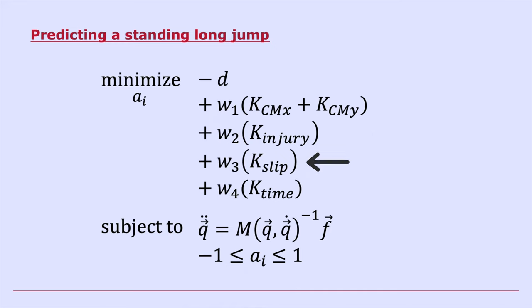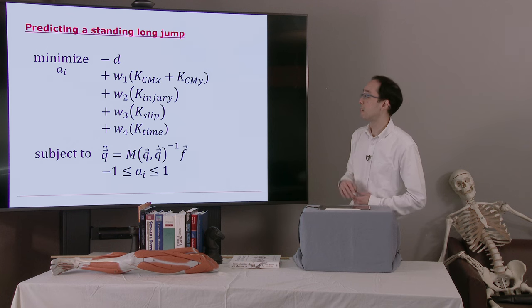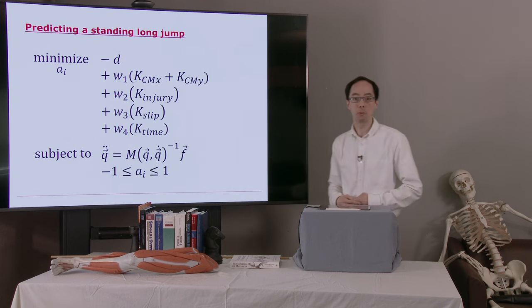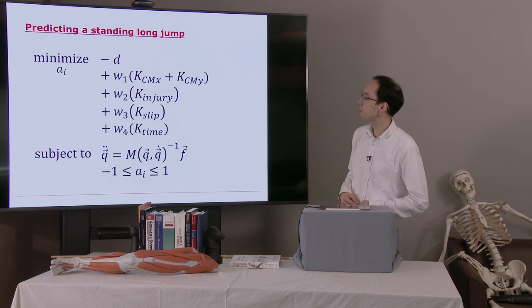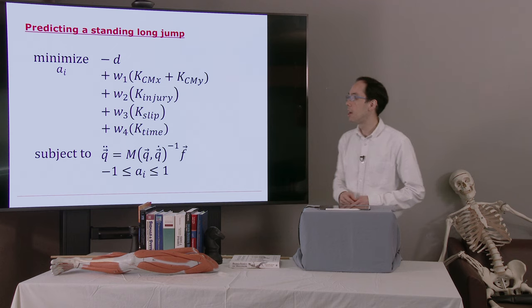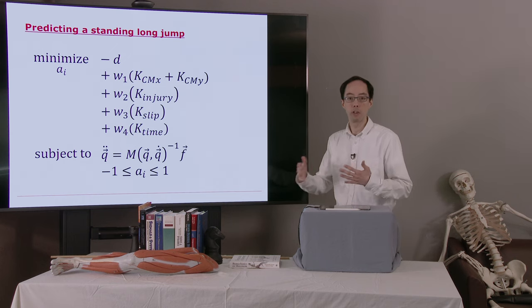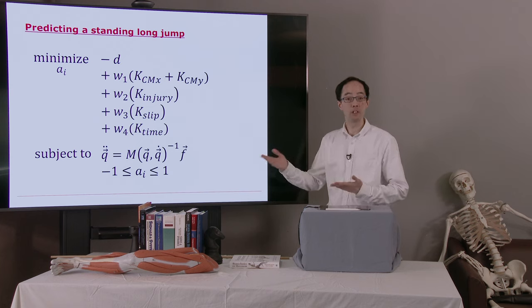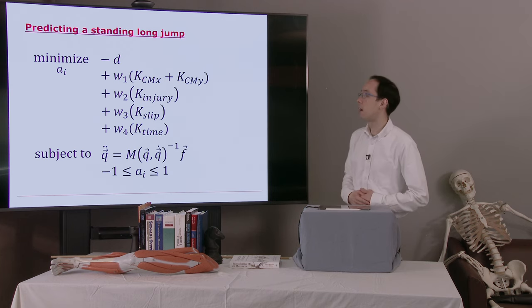There's a term to avoid having the model slip when it lands, etc. So you could add a bunch of other terms here, depending on how the optimizer is performing. And you'll notice these terms are weighted. We have weights w1 through w4. These tell the optimizer how important each one of these terms is. And these terms might also be in different units. So you'd also want to normalize the units somehow between, say, seconds versus newtons.